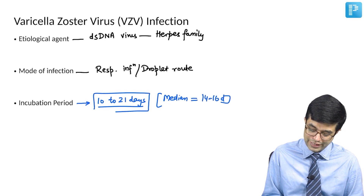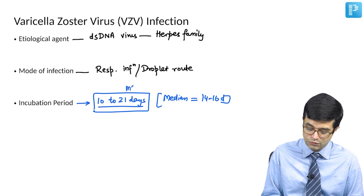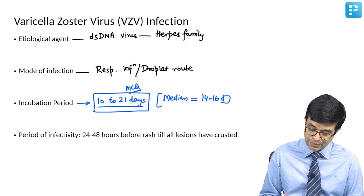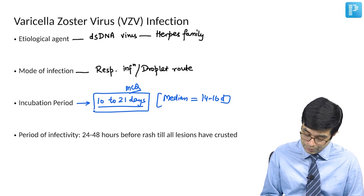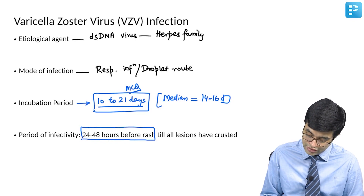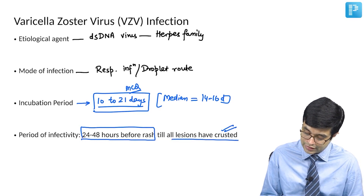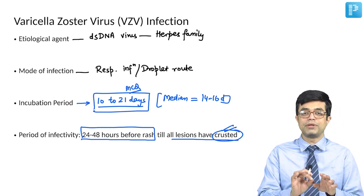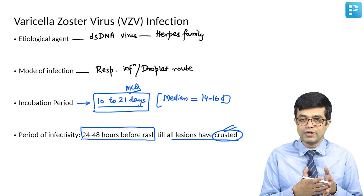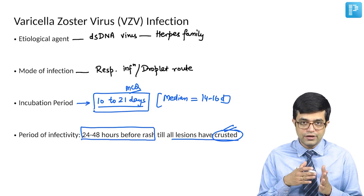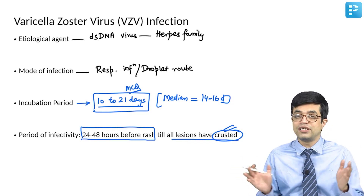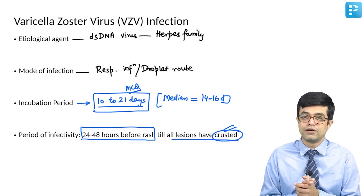However, if you are asked a range in an MCQ exam — as was asked in one of the older questions — the answer will be 10 to 21 days. The period of infectivity is 24 to 48 hours before the rash appears until all the lesions have crusted. Crusting of lesions denotes that the patient is no longer infective. These children with chickenpox are not allowed to go to school until all lesions have crusted.